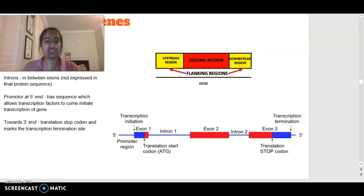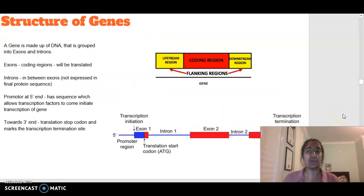Moving on to the structure of genes. A gene is made up of DNA and is grouped into exons and introns. Your exons are your coding regions that are going to undergo translation, whereas introns are located in between exons and they are not going to be expressed in the final protein sequence. In transcription post-modification, those introns are spliced. They remain in the nucleus, whereas that mature mRNA is going to get translated. So those introns are not going to be expressed in the final protein sequence.